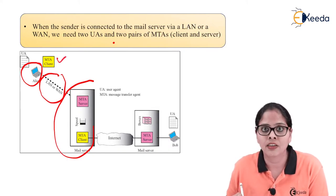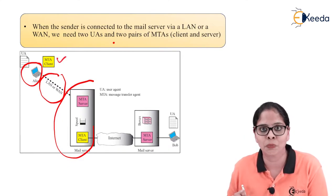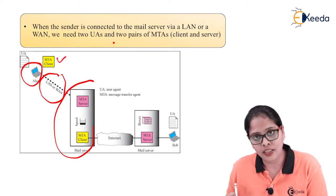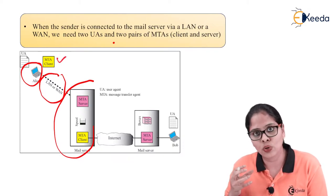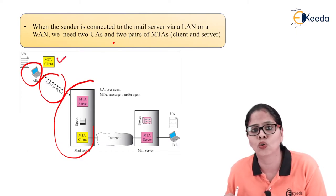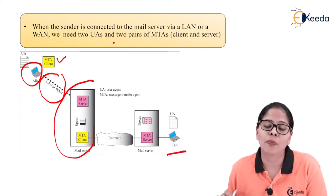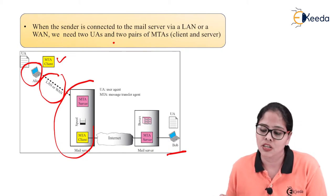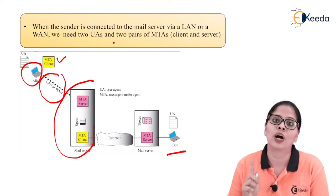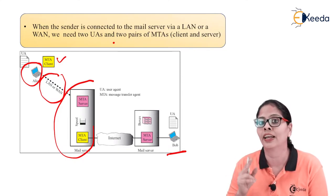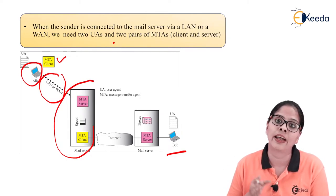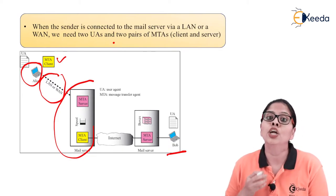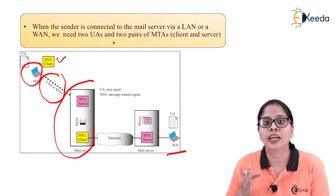The mail server again needs another pair of MTA client to push that mail to the internet. At the receiver, we need the MTA server which can access that mail. It is stored in Bob's mailbox, and Bob can open it and retrieve the message. In the last situation we needed only one MTA client-server pair, but here we need two MTA client-server pairs because the sender is not directly connected to the mail server — he is connected by WAN or LAN, so to push from your PC to the mailbox, you need another MTA client-server pair.